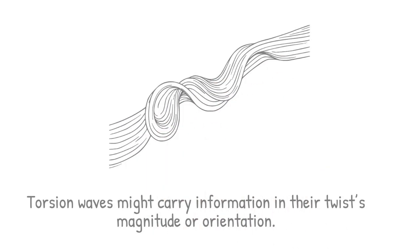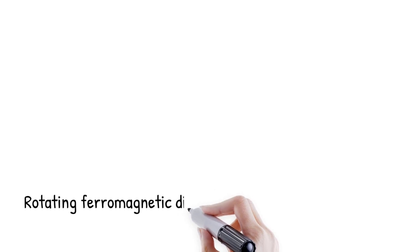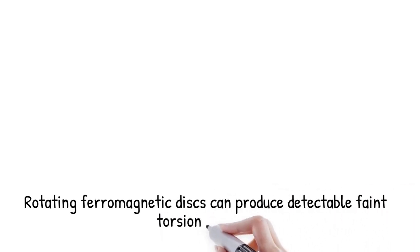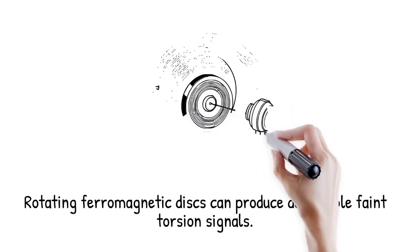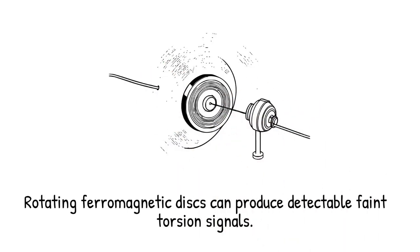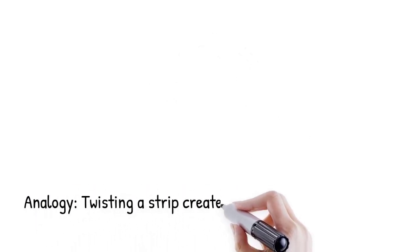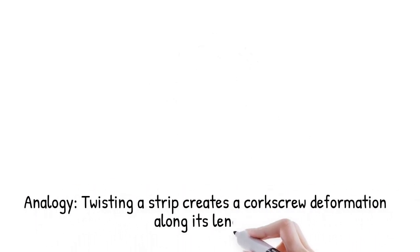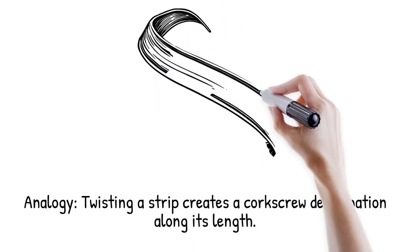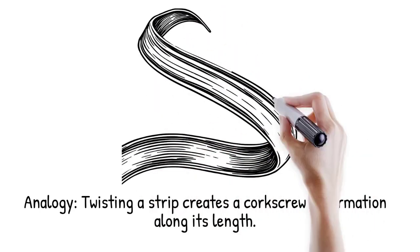Some experiments have claimed that rotating ferromagnetic disks produce faint torsion signals detectable by nearby gyroscopic sensors under specific threshold conditions, much like twisting one end of a long narrow strip and expecting that corkscrew deformation to travel down its length rather than simple bending waves.